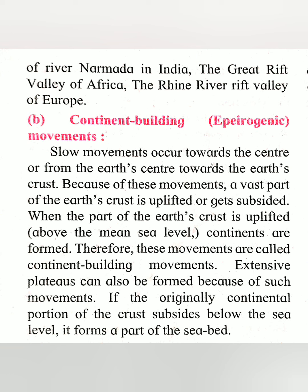The next type is the epeirogenic movement, also called the continent building movement. Slow movements occur towards the center of the earth or from the earth's center towards the earth's crust. Because of these movements, a vast part of the earth's crust is either uplifted or subsided. When a part of the earth's crust is uplifted above the mean sea level, continents are formed — therefore these movements are called continent building movements.